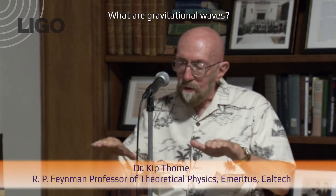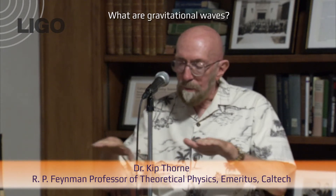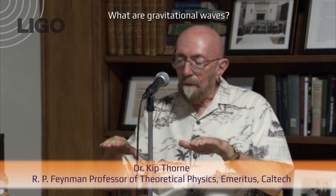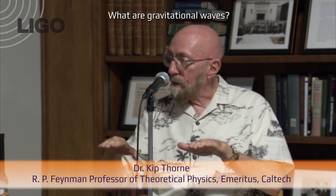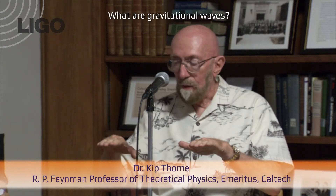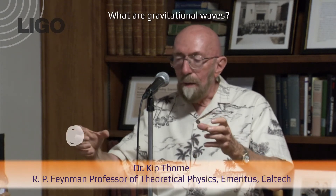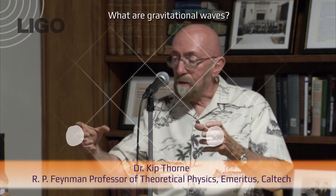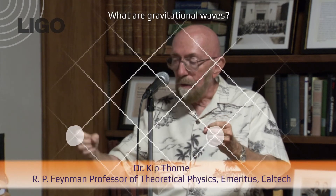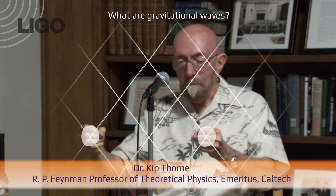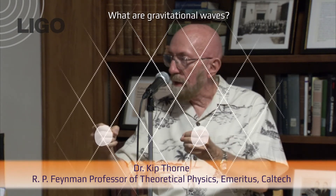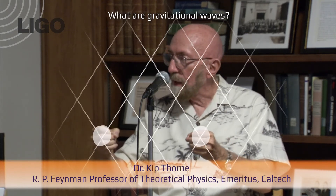A gravitational wave stretches and squeezes space, and things ride on that stretching and squeezing space. So if you have two objects out in space, just floating there — one here and one there — and a gravitational wave comes by, they'll move back and forth relative to each other because space is stretching and squeezing in between them.